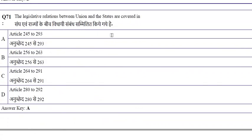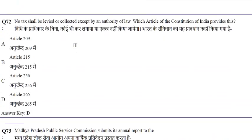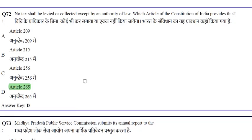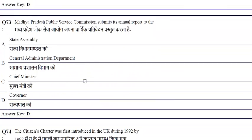The legislative relations between the union and states are covered in Articles 245 to 293. Article 265 provides that no tax shall be levied or collected except by authority of law — please remember this important question.